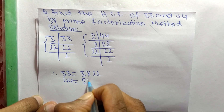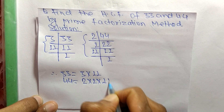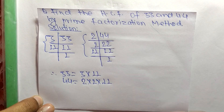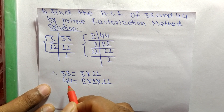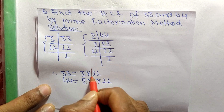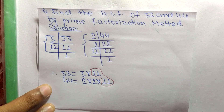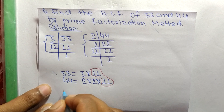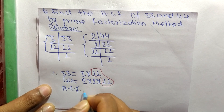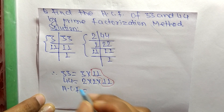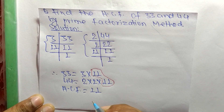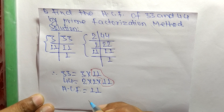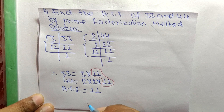Now we find the common factors in the prime factors of 33 and 44. The common factor here is 11. So the HCF of 33 and 44 is 11. That's it for today — thanks for watching.